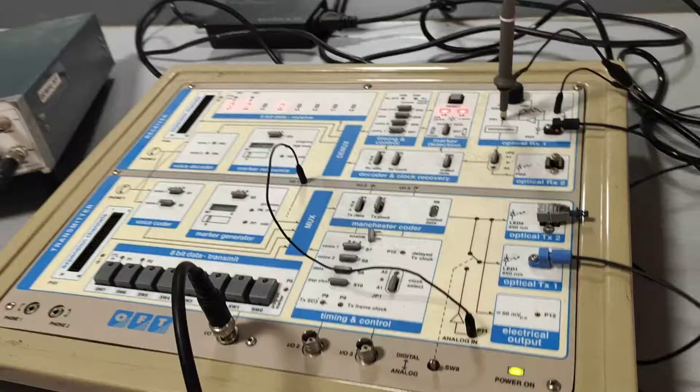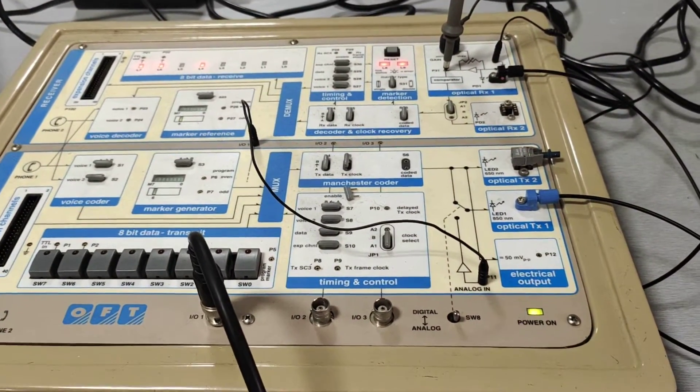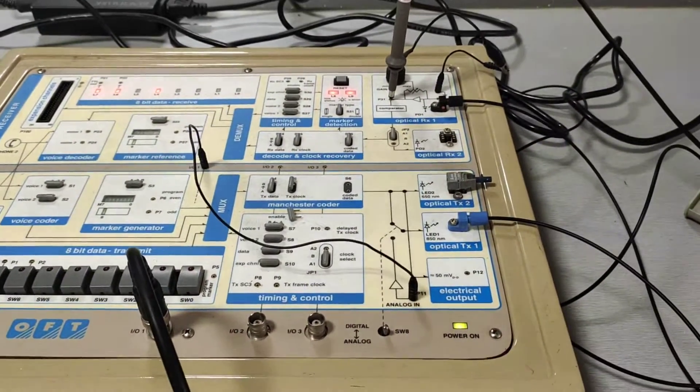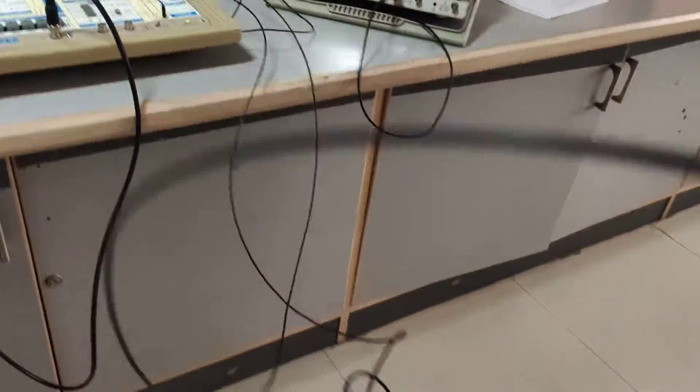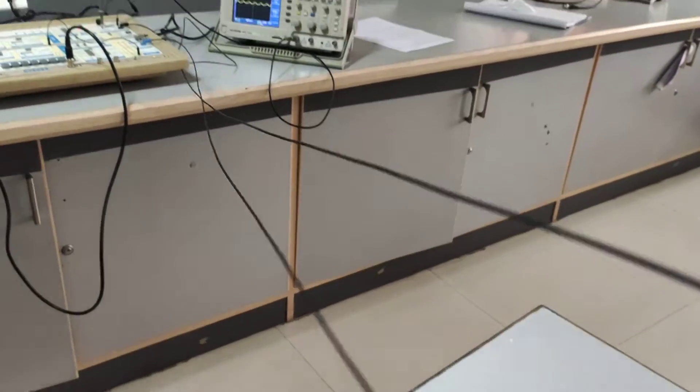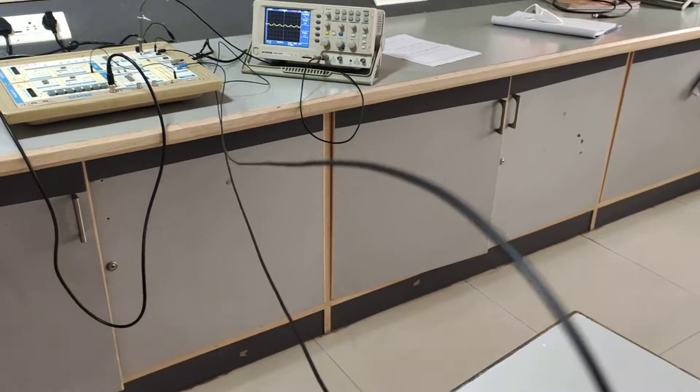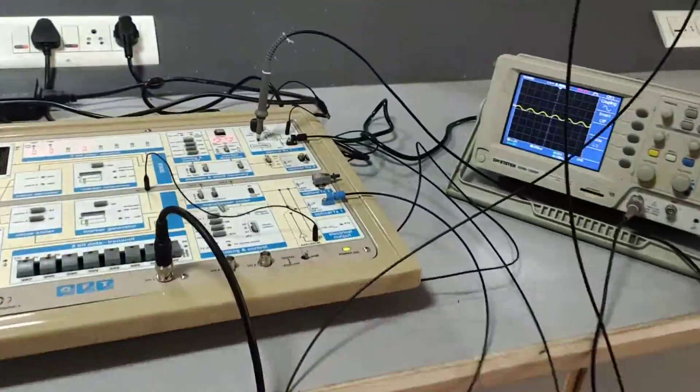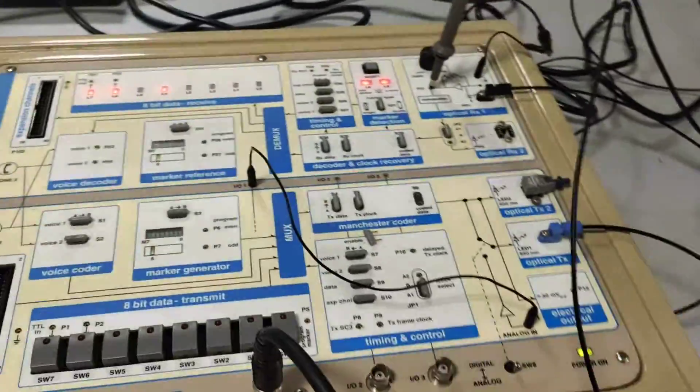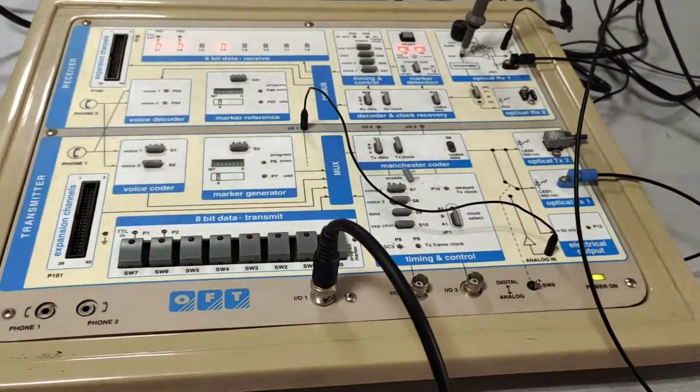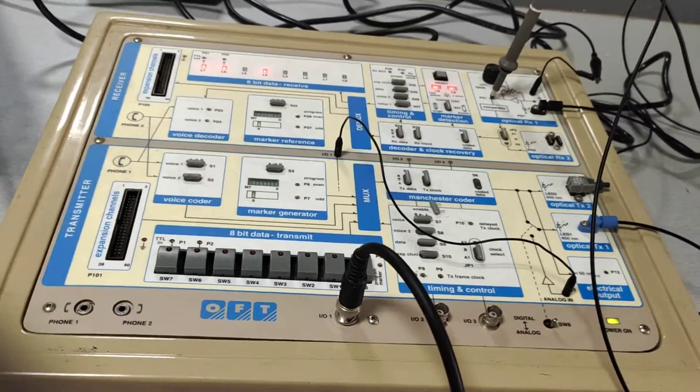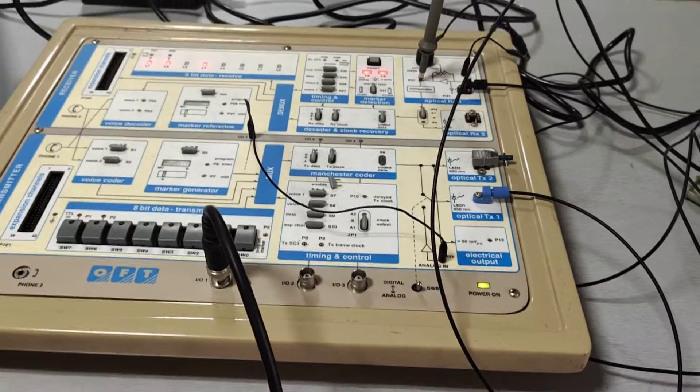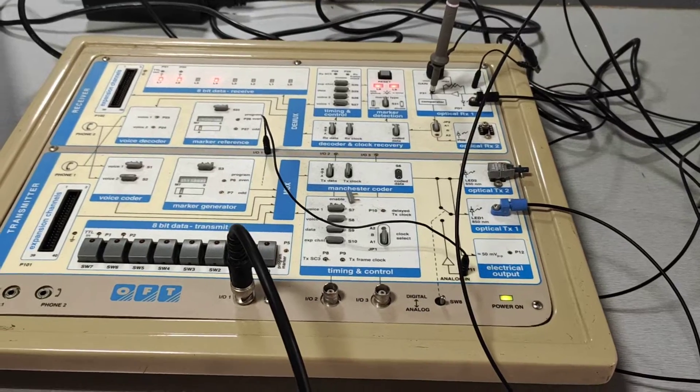From this we can conclude that depending upon the length of the cable, the loss is acquired. This is the attenuation loss. Once you increase the length of the cable, there will be loss of information. In the first 1 meter cable we get 1.6 volt output, after connecting 3 meter cable we get 0.6 volt. From this we can understand the concept of attenuation. Attenuation occurs in optical fiber. Thank you.